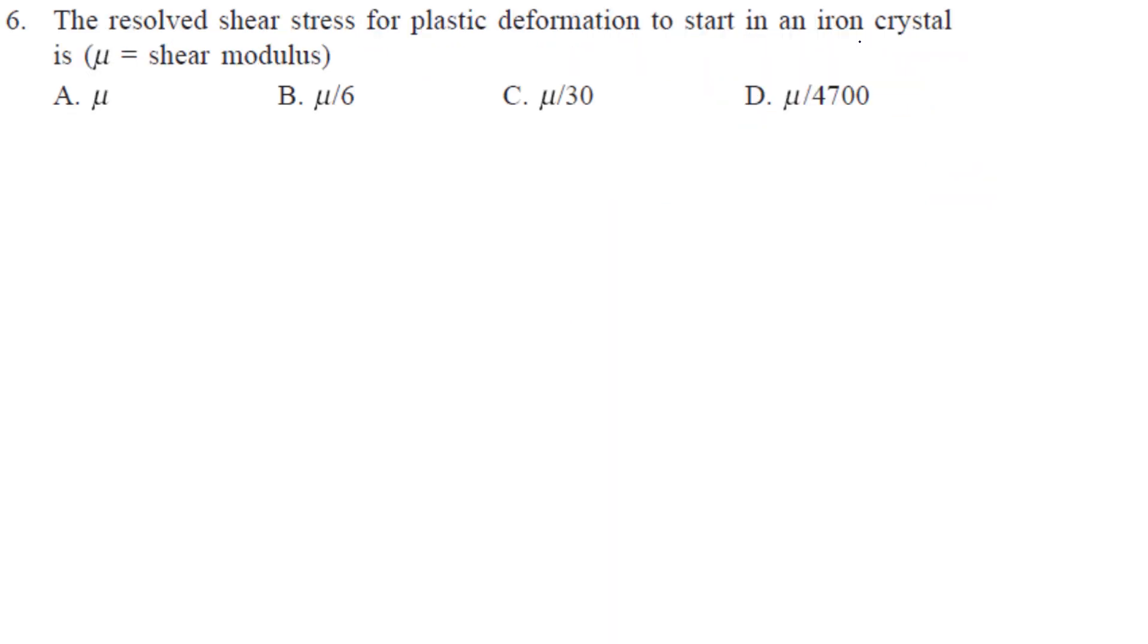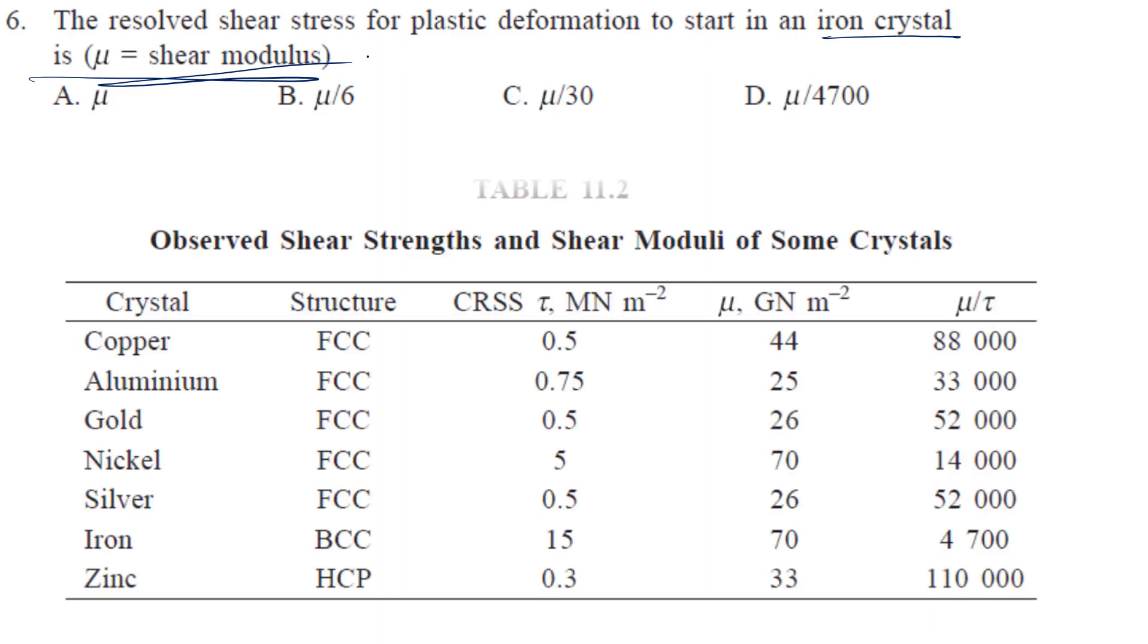Let us proceed. The resolved shear stress for plastic deformation to start in an iron crystal. Iron crystal is mu is equal to shear modulus. So this is some typical value. So you don't need to remember this one because it has been taken from this table. So this is the table.